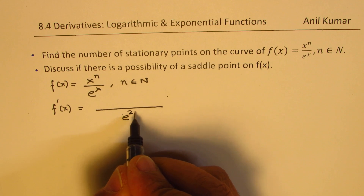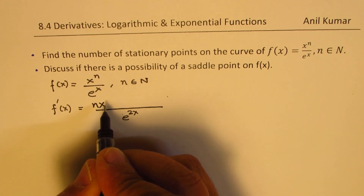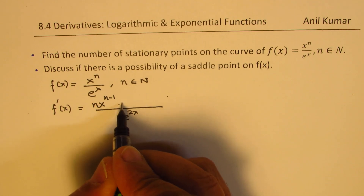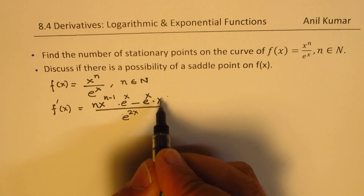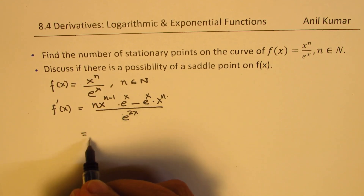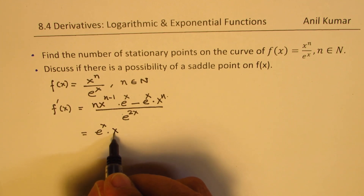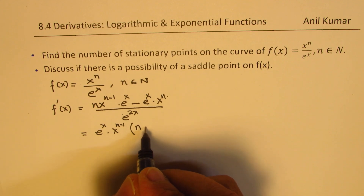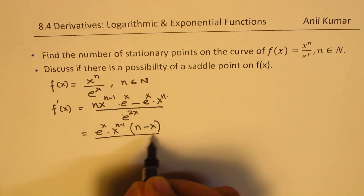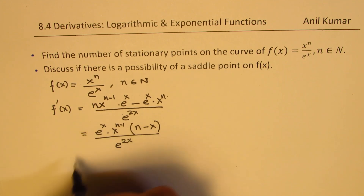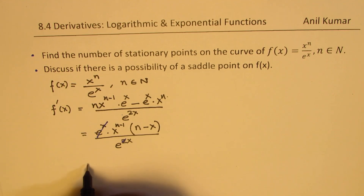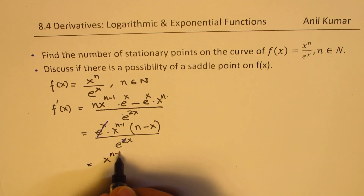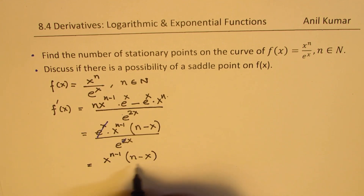Applying the quotient rule with denominator e^(2x): the numerator is e^x · n·x^(n−1) minus e^x · xⁿ. We can take e^x · x^(n−1) as a common factor, giving us (n − x) in brackets, divided by e^(2x). After simplification, e^x cancels, and what we have is f'(x) = x^(n−1) · (n − x) / eˣ.